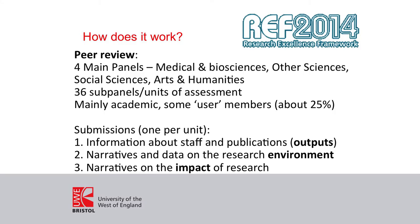As a university, you submit to as many units as you want across those 36 subjects. What you submit is information about research-active staff in the form of outputs — we use the term 'outputs' rather than publications so that arts and humanities aren't constrained, as they do exhibitions, music compositions and things that aren't publications. You also provide information about the research environment in that unit — a narrative document describing infrastructure, facilities, schemes to promote research, and the culture of the department. And then, for this exercise for the first time, there's a section on impact.